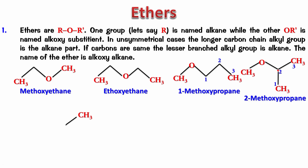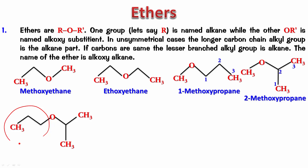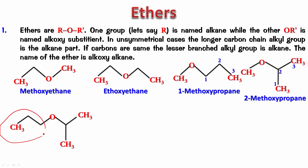Try this one. On one side I've got three carbon atoms, and on the other side I also have three carbon atoms. According to the rule, if carbon atoms are the same, the lesser branched alkyl group is the alkane. So the alkane is the straight-chain one, and this is the alkoxy — which is the isopropyl group, so it is isopropoxy. We number it giving the lowest possible number to the carbon that has the alkoxy group: 1-isopropoxypropane.